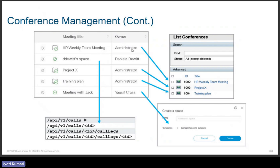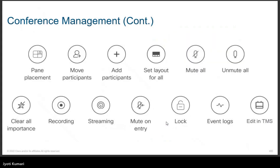For conference management, if you have integrated TMS, you will be able to do view and edit operations from here using APIs, including meeting titles and owner information. Conference management provides various features like pane placement, where you can place users as per their preference. For example, out of 15–20 users in a conference, you can choose four specific users — such as CEO, vice president, director, and HR head — to be displayed on the screen.